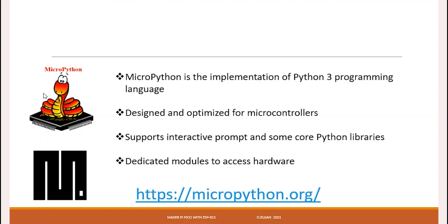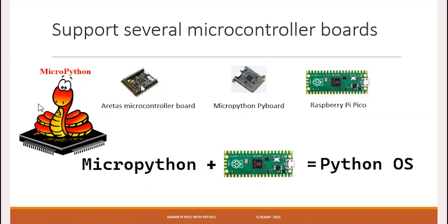MicroPython is the implementation of Python 3 programming language. It's been designed and optimized for microcontrollers, supports interactive prompts, and some core Python libraries. It has dedicated modules to access hardware. There are several microcontroller boards that have been designed to use MicroPython — for example, the Aritas Microcontroller, the PyBot, and the Raspberry Pi Pico.